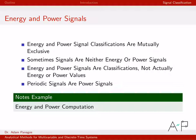Energy and power signal classifications are mutually exclusive. That means if I compute E and find it is non-zero and finite, I declare that signal an energy signal — and once declared an energy signal, it is not a power signal. Similarly, if I determine that a signal's power P is bigger than zero and less than infinity, then it cannot be an energy signal. If you're an energy signal you are not a power signal, and vice versa.